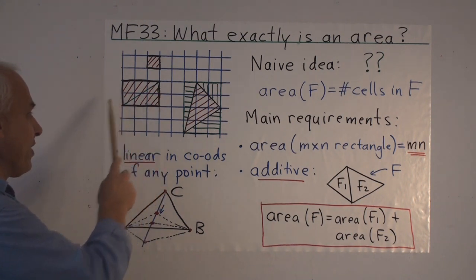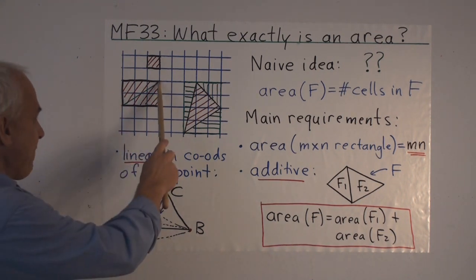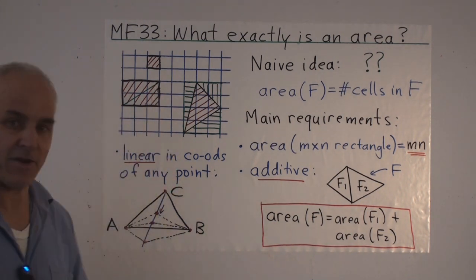For example, a rectangle like this will have area 6. Half of it forming a triangle will have area 3.